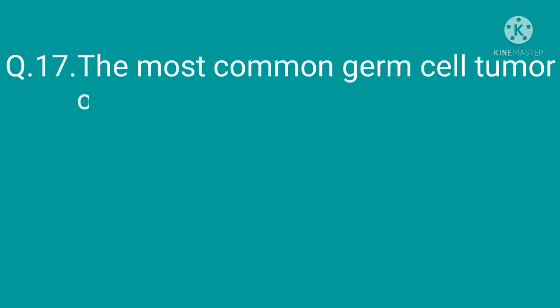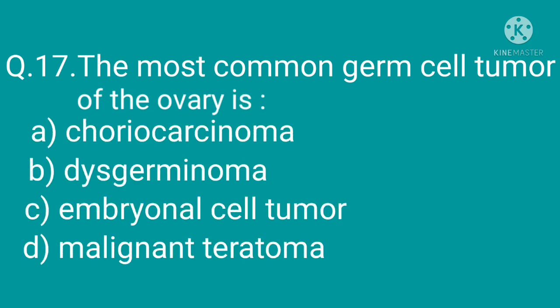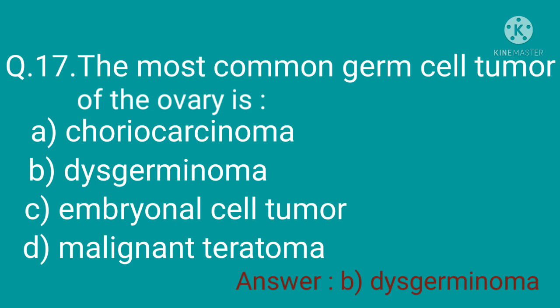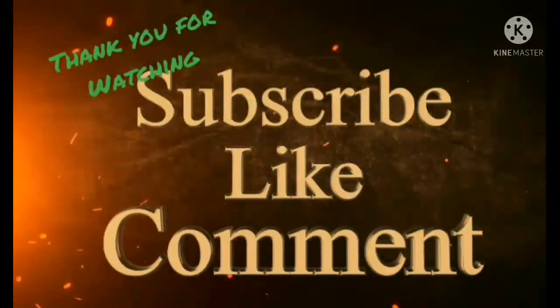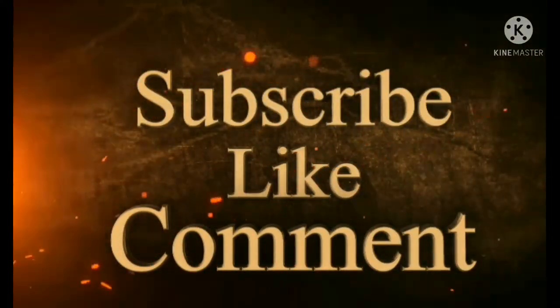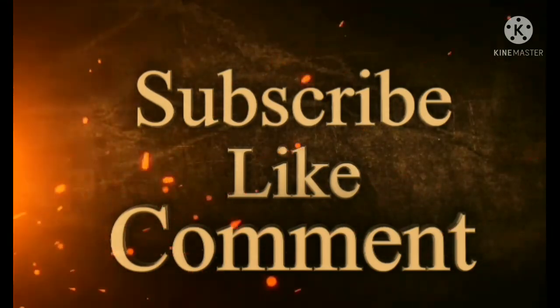Question 17: The most common germ cell tumor of the ovary is — option A: choriocarcinoma, option B: dysgerminoma, option C: embryonal cell tumor, option D: malignant teratoma. The correct option is option B, dysgerminoma.